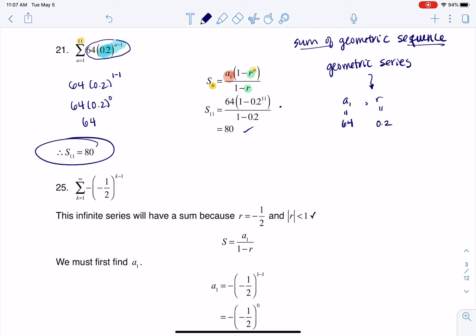And then when I get done, I find that if I added the first 11 terms of my sequence—adding terms means you're looking at a series—it would add up to 80.